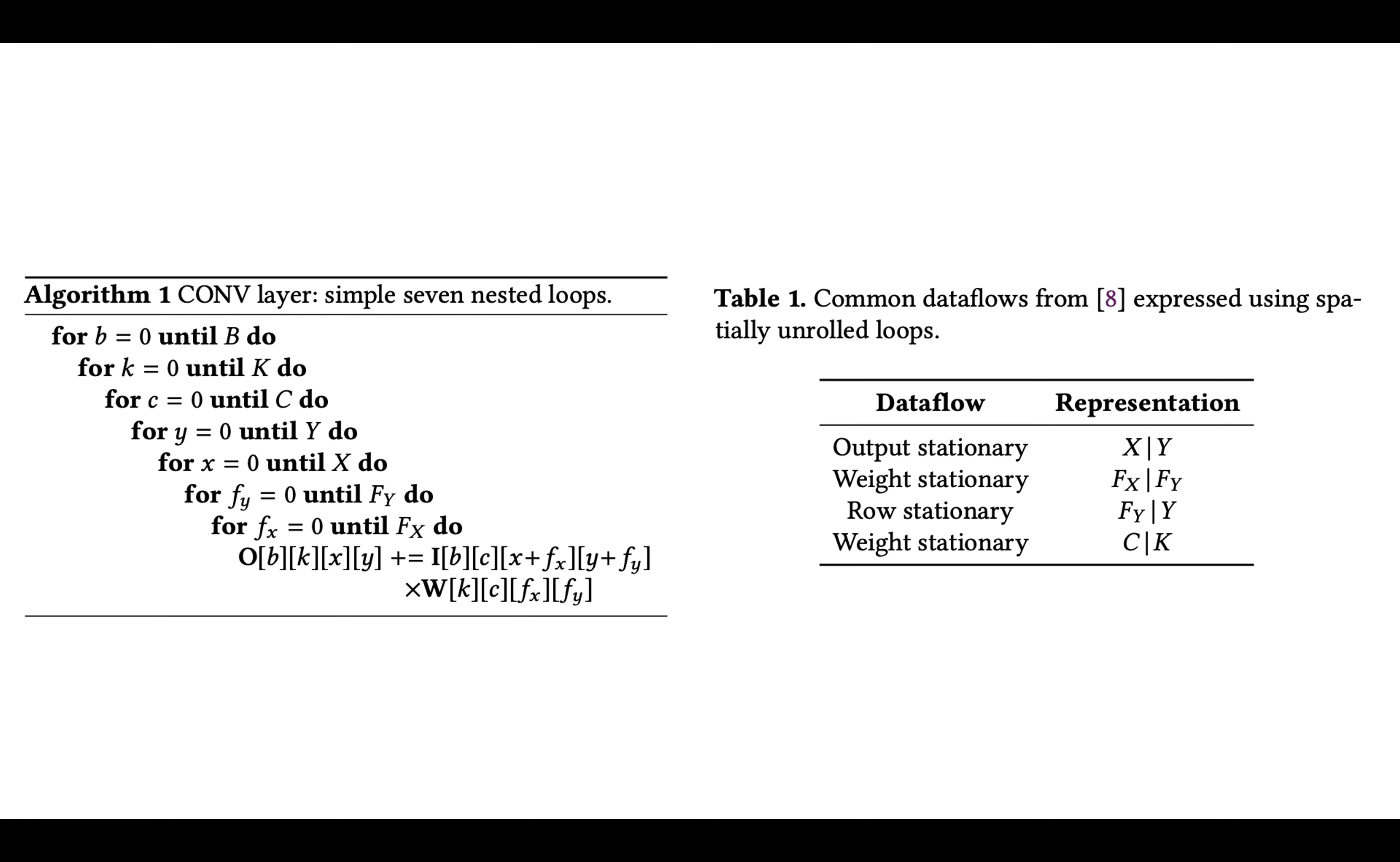So just to get some terminology straight for this paper, they're accelerating convolutional neural networks. So the conv layer has seven loops in the nest if it's unoptimized. And they classify the different data flow schemes using this notation of basically one loop name, and then bar and then another loop name.